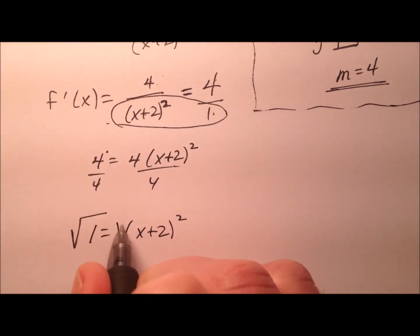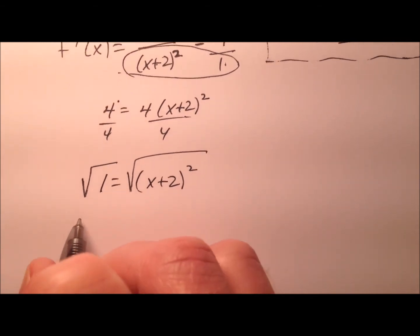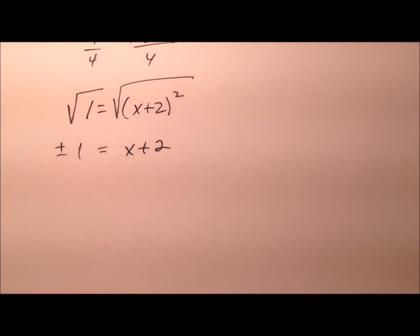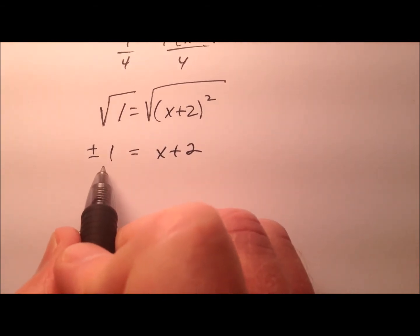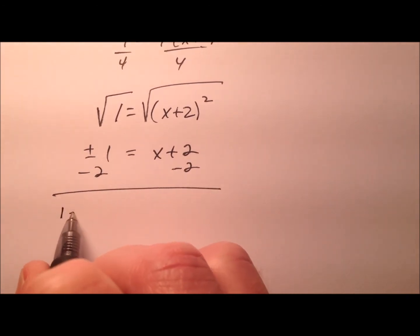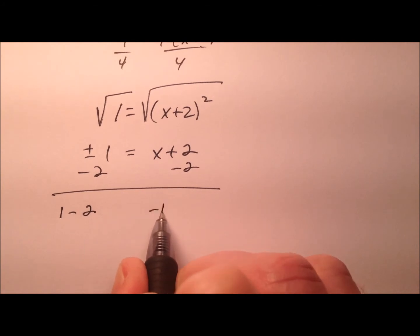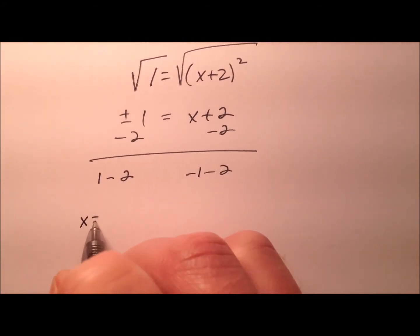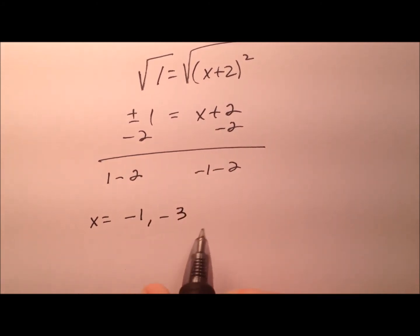All right, well, I can do a quick square root of both sides. And when I do that, I'll have plus or minus 1 on the left side and an x plus 2 on the right side. So I'll have two values. So when I subtract 2 from both sides, it'll be a positive 1 minus 2 and a negative 1 minus 2. So my values of x will be, well, it looks like negative 1 and negative 3.